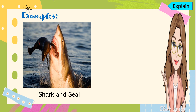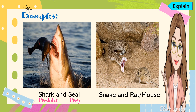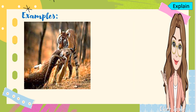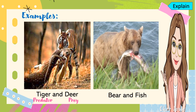Here are the examples of predation. The first one, we have shark and seal: the shark is the predator and the seal is the prey. Another example, we have snake and rat: the snake is the predator and the rat is the prey. Another example, we have tiger and deer: the tiger is the predator and the deer is the prey. Last example, we have bear and fish: the bear is the predator and the fish is the prey.